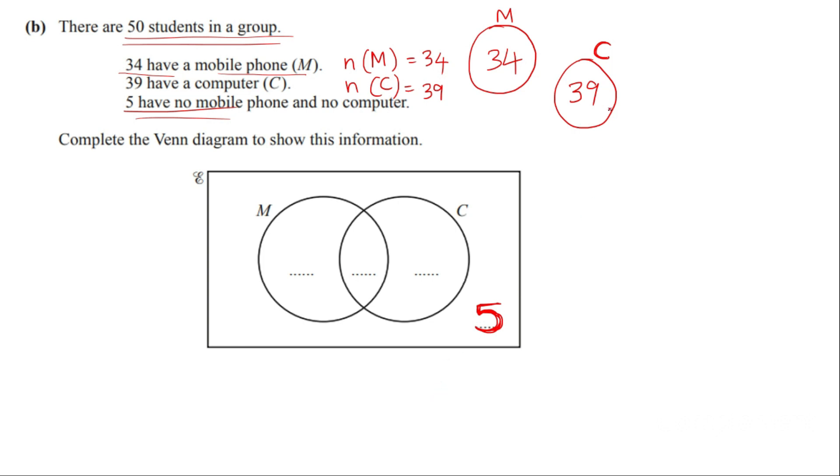Now if you look at the sum here, can you see this? 34 plus 39 giving you 73. Which is not true. Why? Because you just have a total of 50 students. So I have seen students writing 34 and 39 here and then don't know what to do. Because you still have something to be filled. So this is a wrong approach. Let's see how to figure it out.